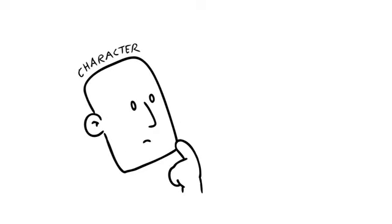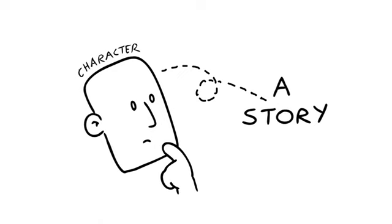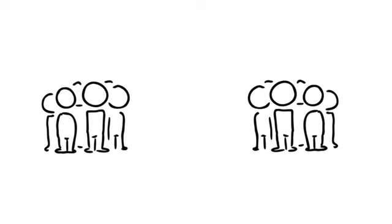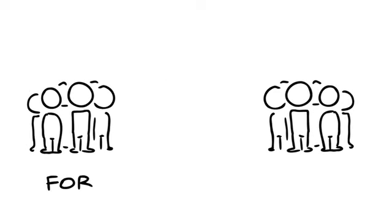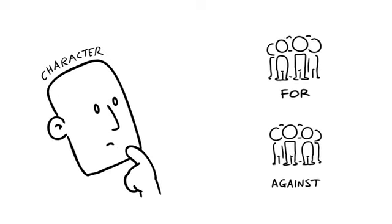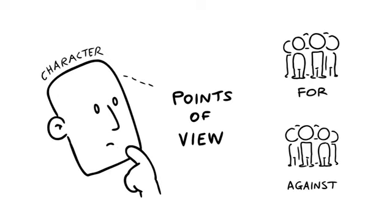How? Choose a dilemma or decision that a character from a story has to make. Now, split the class into two groups. One side is for and the other side against, as if each point of view is actually coming from the character's own conscience.